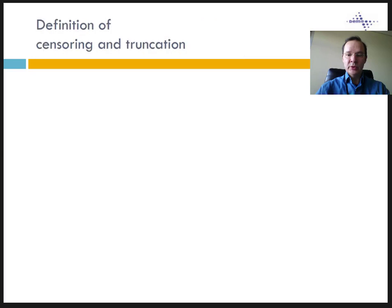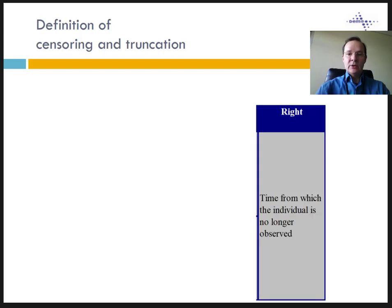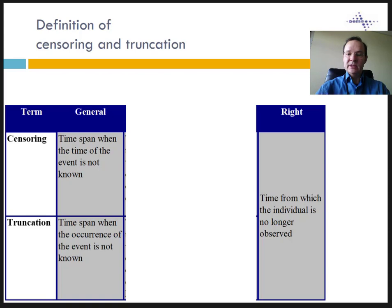One last thing you need to know about censoring is that there are actually two kinds of censoring. So far, we only dealt with right censoring, which is what is meant when people refer to censoring without mentioning 'right.' Right censoring is the time from which the individual is no longer observed. Some textbooks also use the term right truncation. However, the literature now makes a distinction between censoring and truncation. The general definition of censoring is the time span when the moment of the event is not known. The general definition of truncation is the time span when the occurrence of the event is not known. In the case of censoring, the occurrence of the event may be known but not the exact time. In the case of truncation, we don't even know if the event took place.